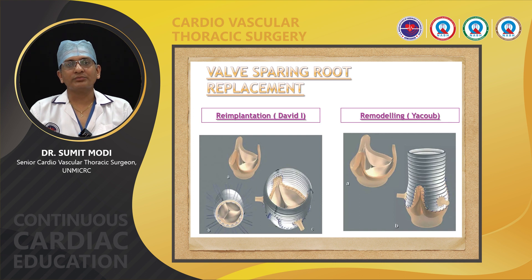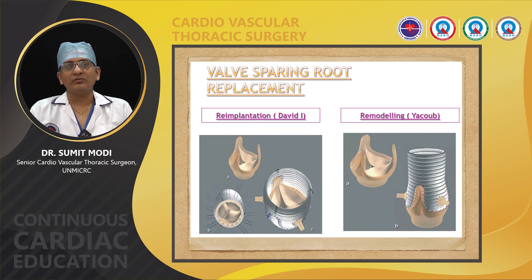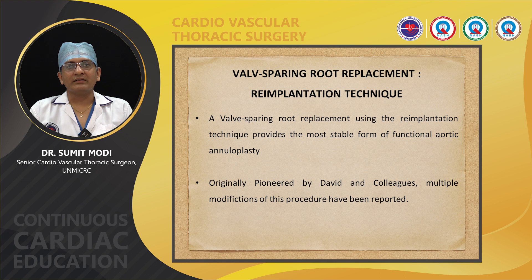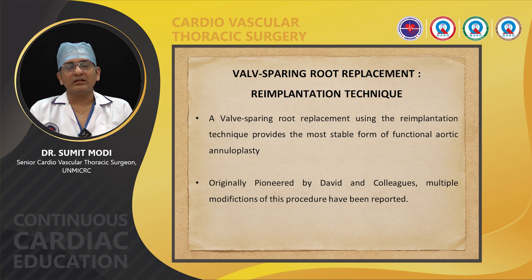Now what are the treatment options? Let us see the treatment options for valve sparing root replacement. There are two procedures: the first is the re-implantation of the aortic valve, pioneered by Tyrone David, and the second is the remodeling of the aortic valve. Valve sparing root replacement using the re-implantation technique provides the most stable form of functional aortic annuloplasty. It was pioneered by David and colleagues, and multiple modifications of this procedure have been reported.